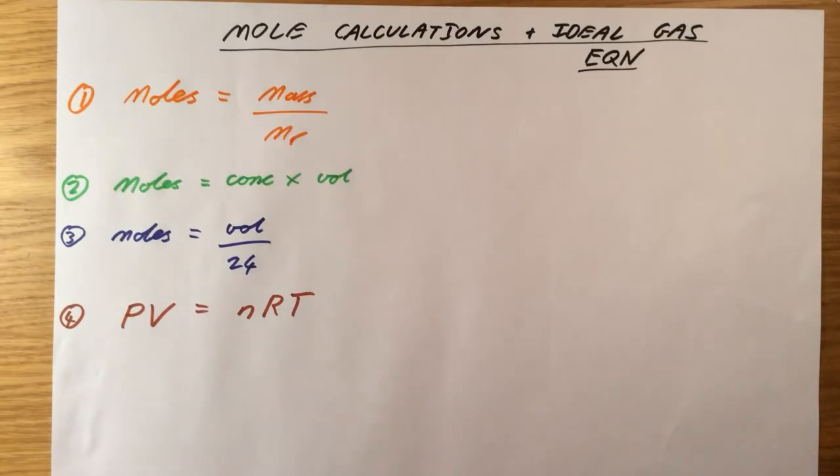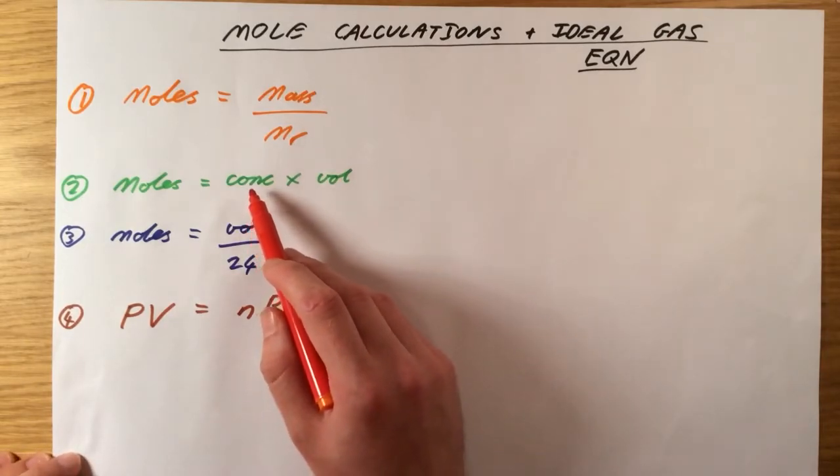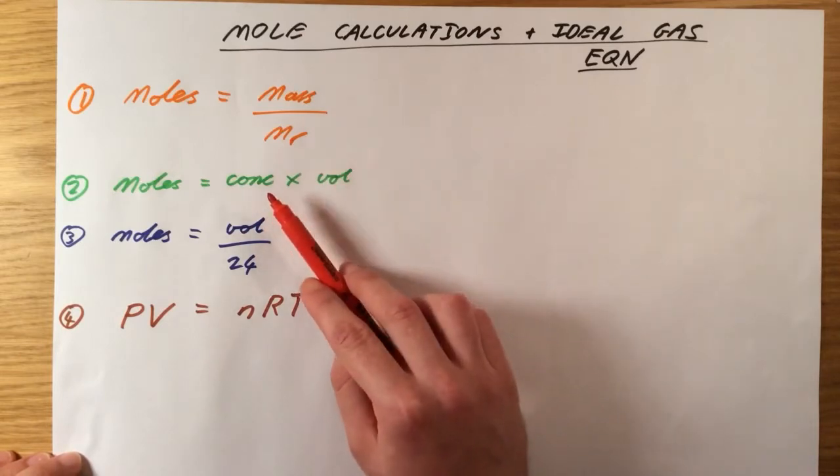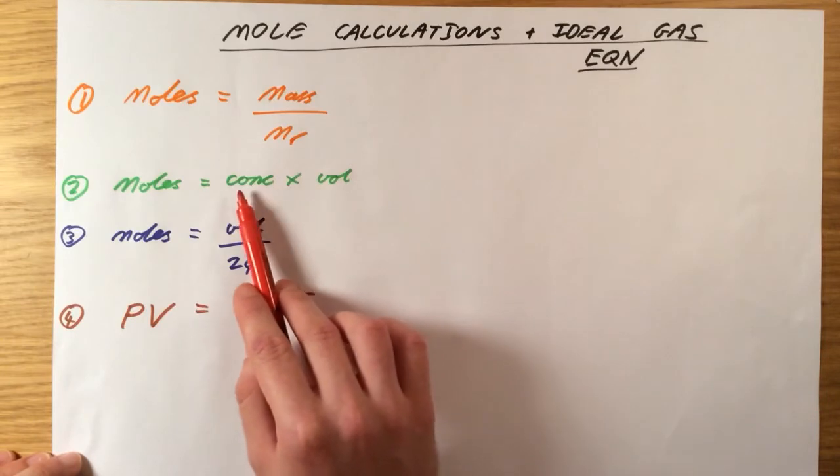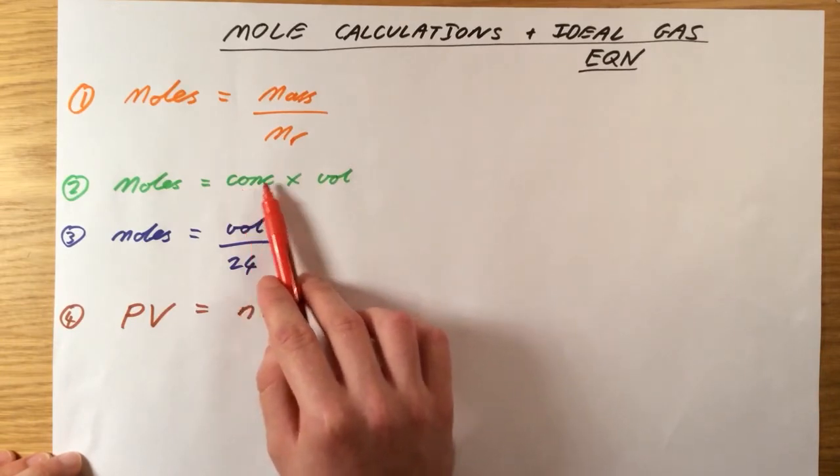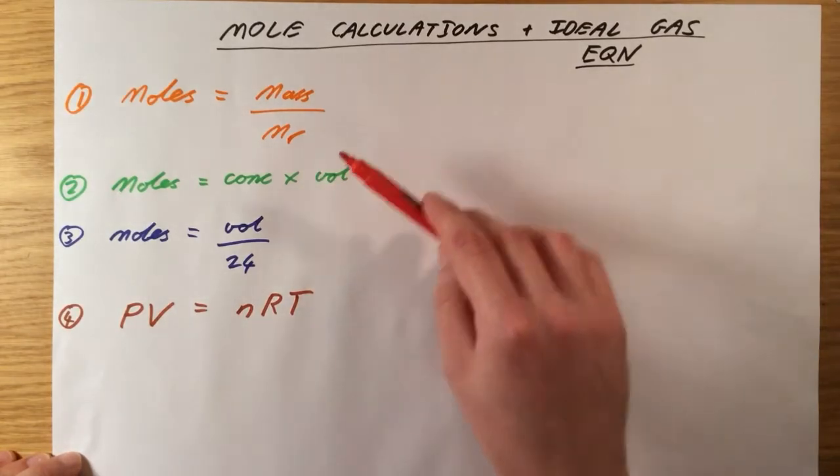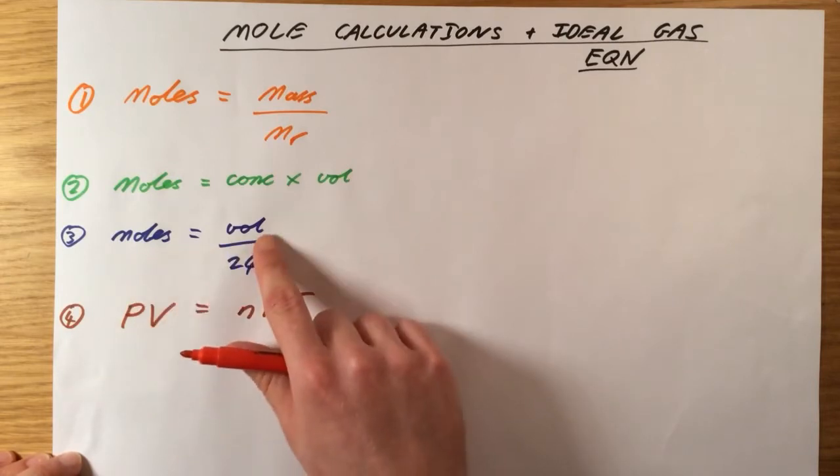The first thing to say is that we like to measure concentrations in moles per decimeter cubed. One decimeter cubed is the same as a liter. It's quite a convenient volume we can relate to quite easily. So if your concentration is in moles per decimeter cubed, volumes here must be in decimeter cubed too. And that applies to this example here and to formula 3 here.